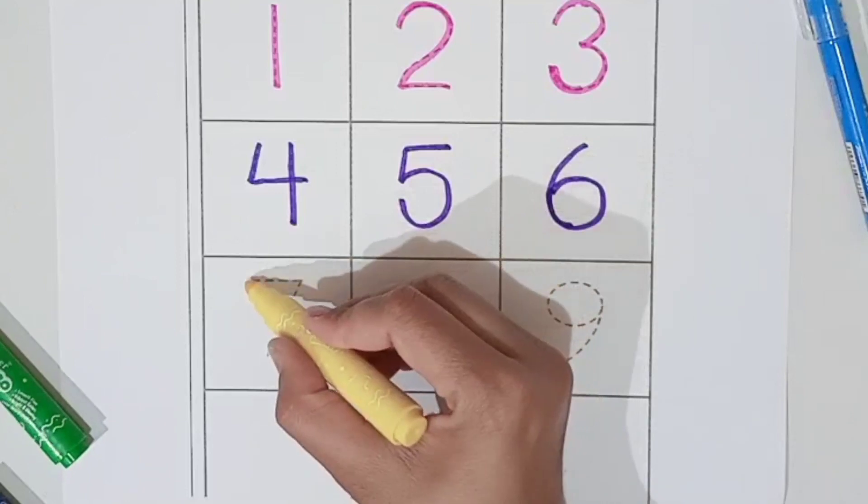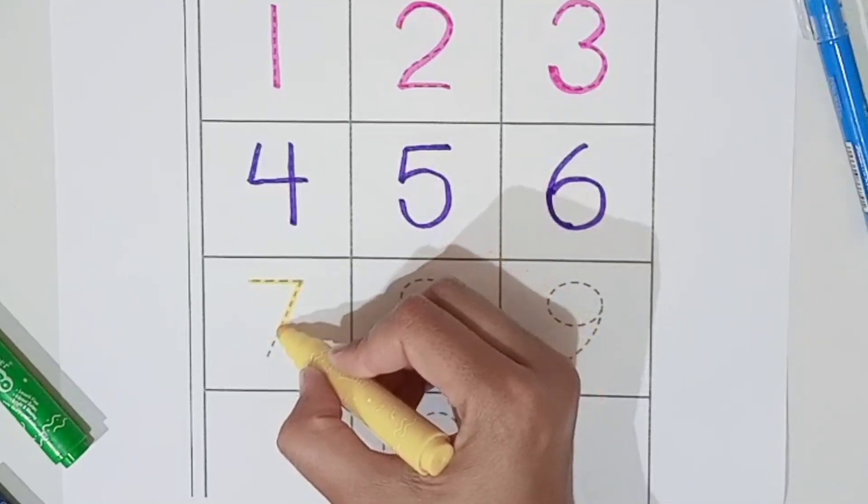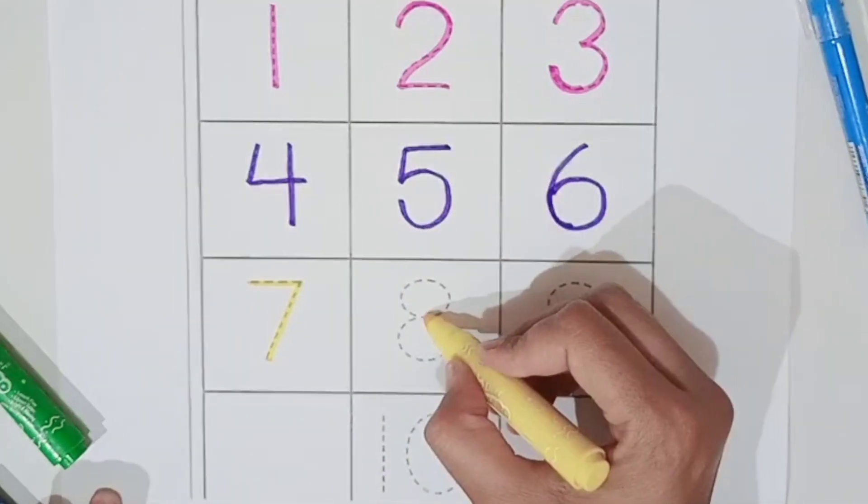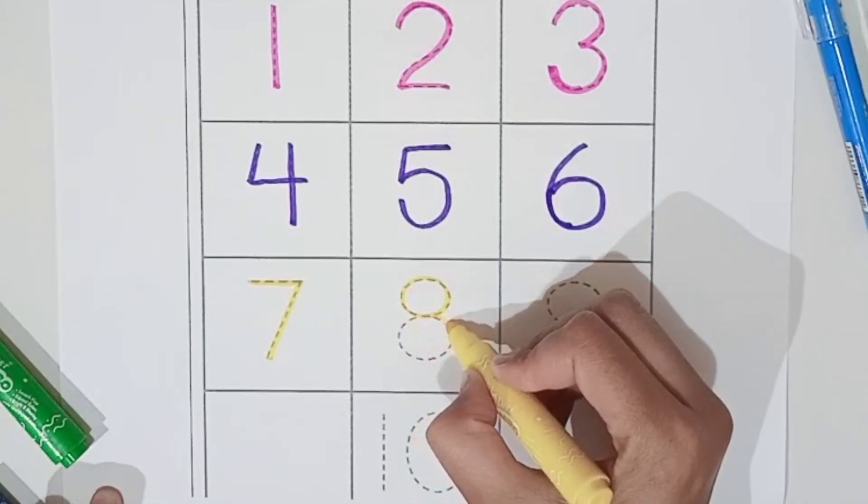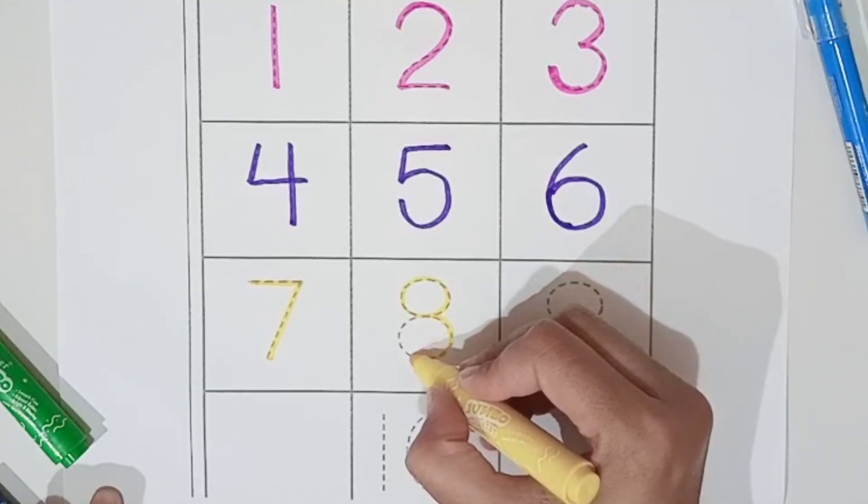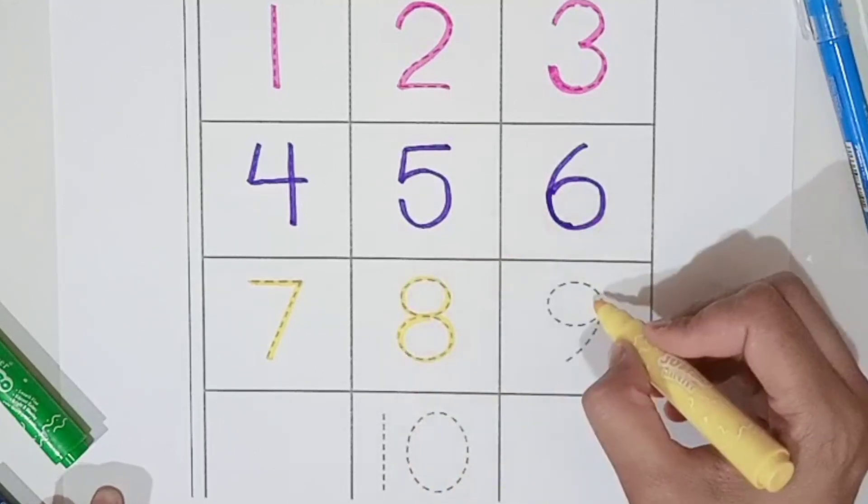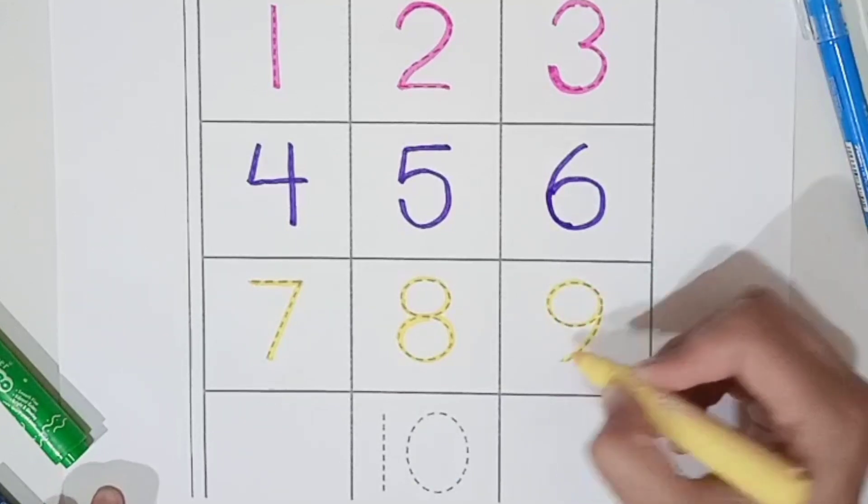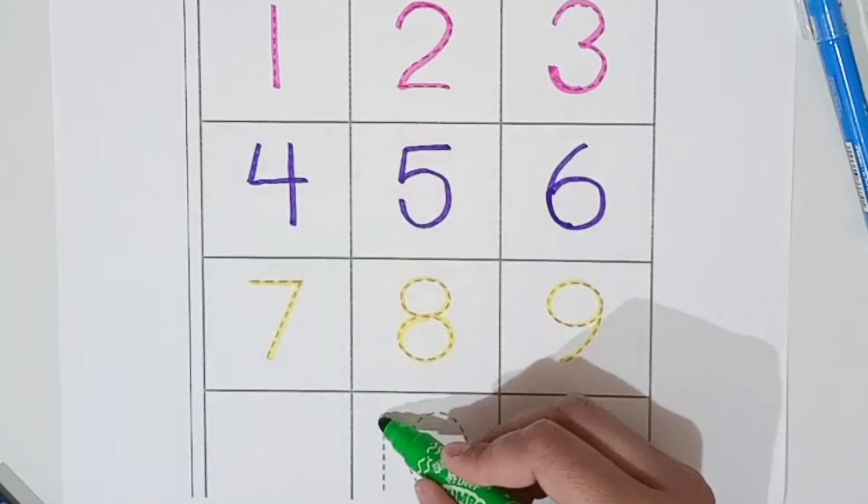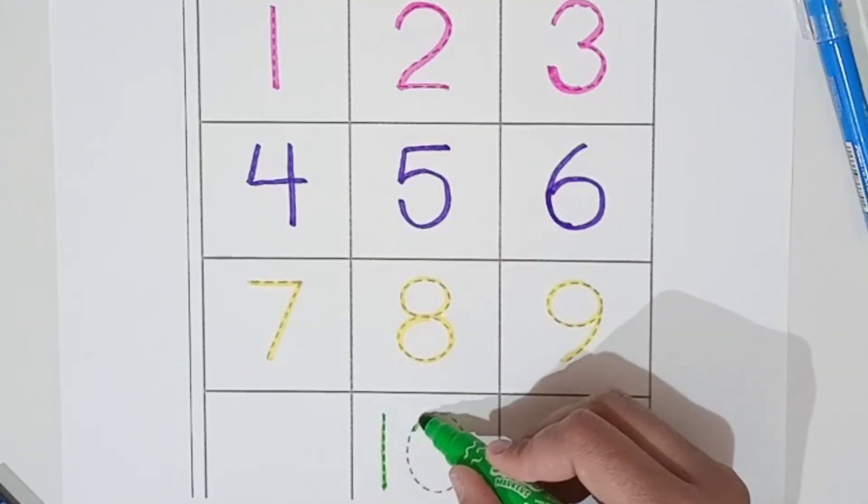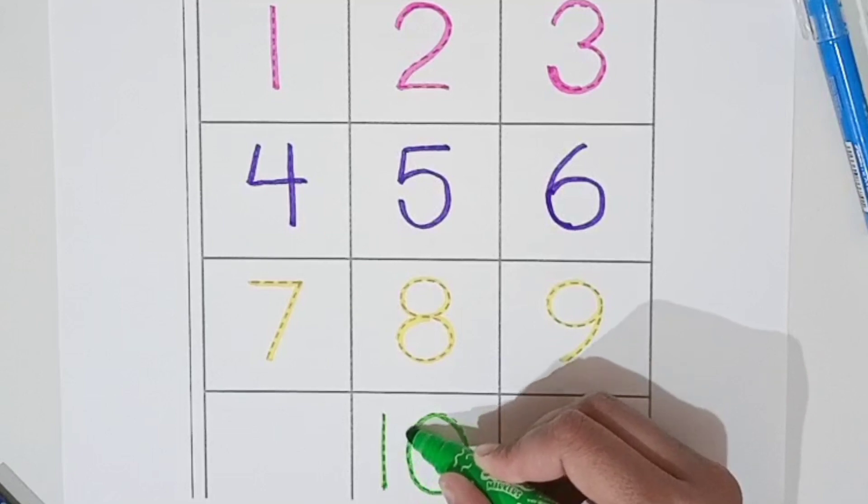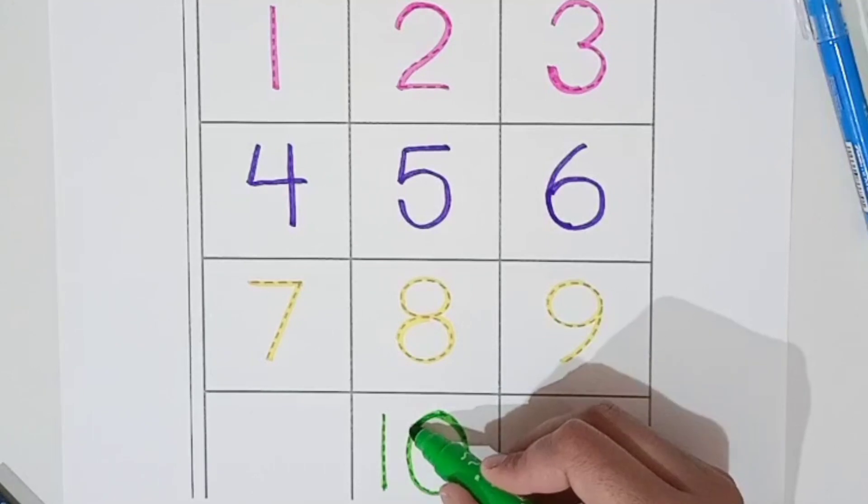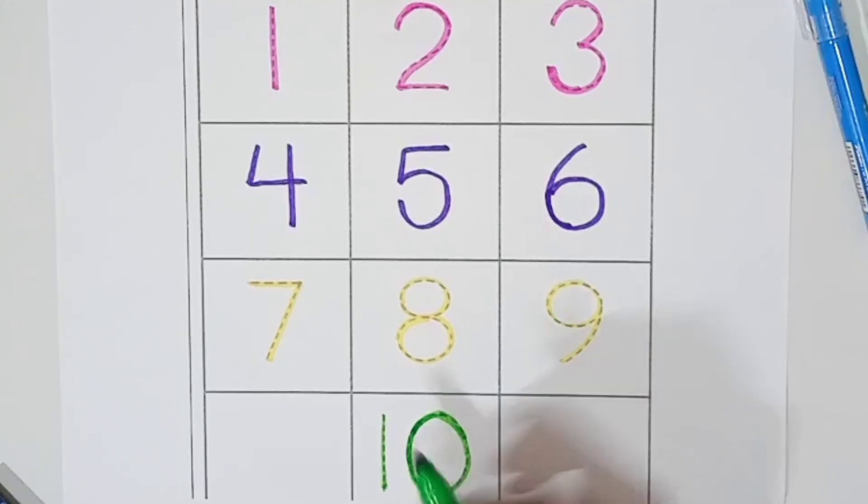Yellow color. Seven, S E V E N 7. Eight, E I G H T 8. Nine, N I N E 9. Green color. One Zero Ten. Like, share and subscribe my channel. Press the bell button. Thanks for watching. Till the next video. Bye-bye.